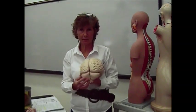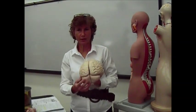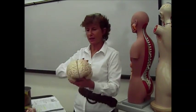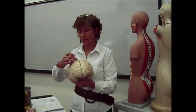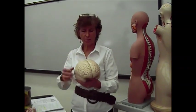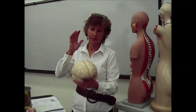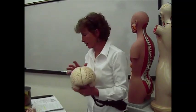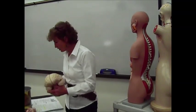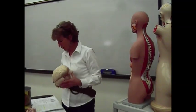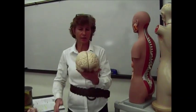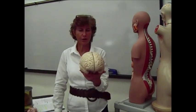The cerebellum coordinates motor movement, and the cerebrum is all your thinking — you've got sensory areas, motor areas, processing areas, and different things like that. Those are the three main parts. Let's start with the cerebrum first.